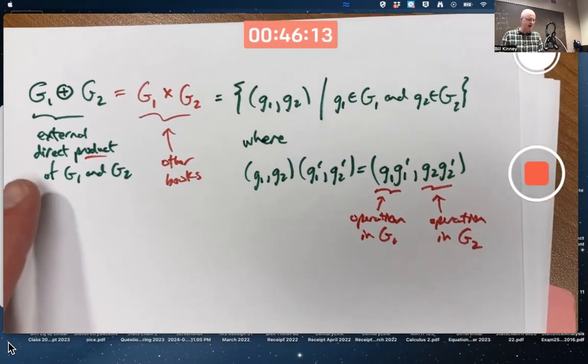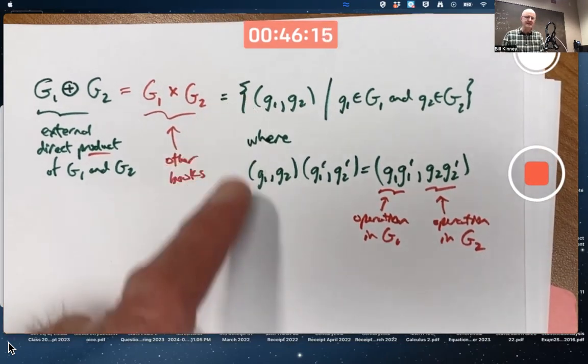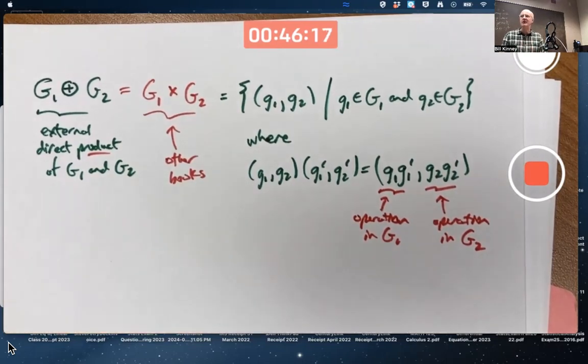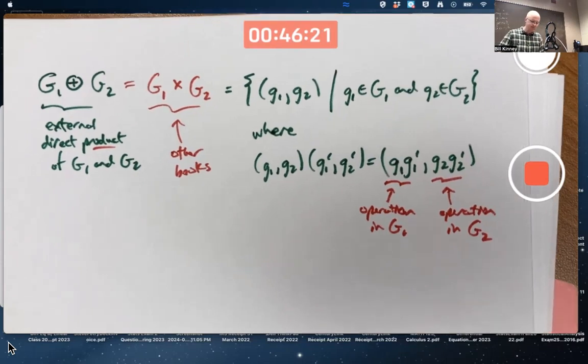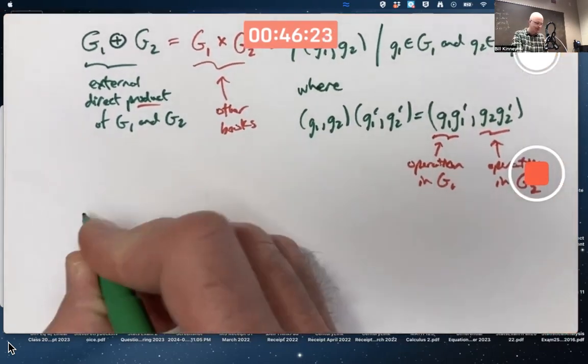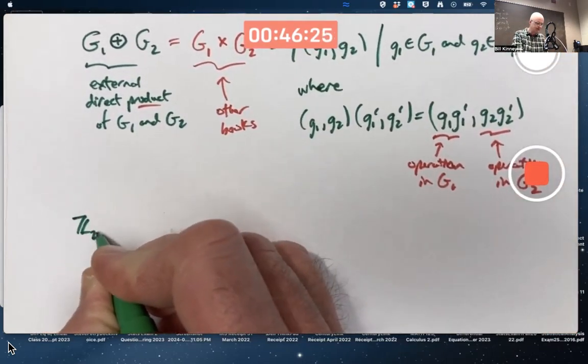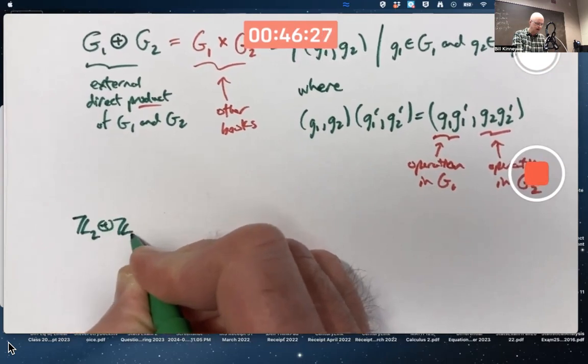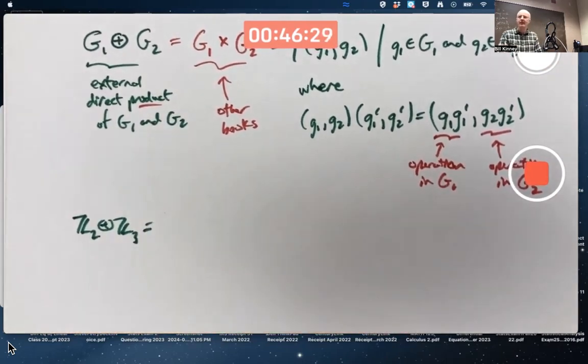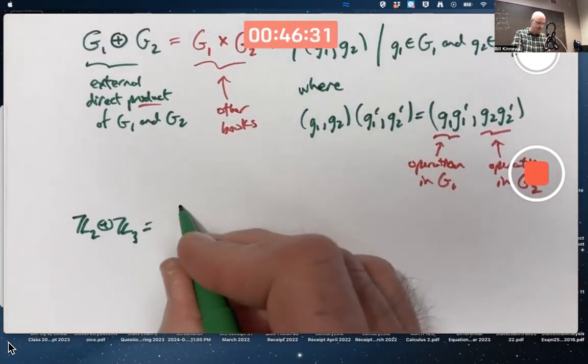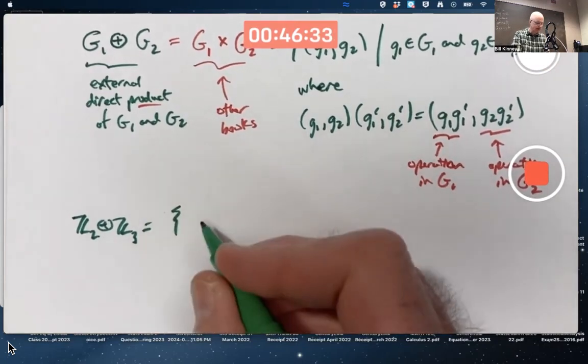This thing, this external direct product, as a set with this binary operation, is a group. As an example, let's take the external direct product of Z2 and Z3. We'll just do this example, and that'll be the end of class today.